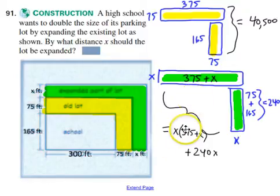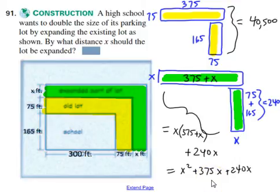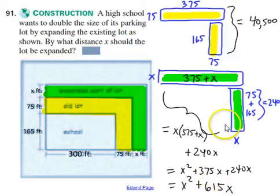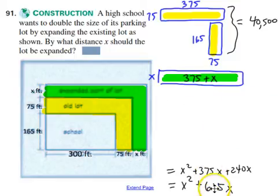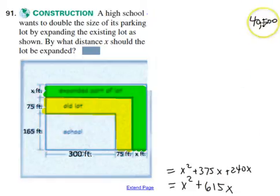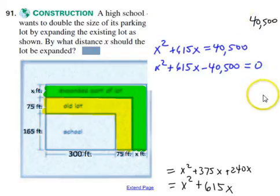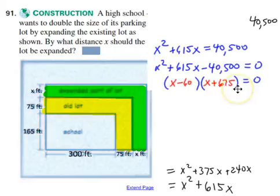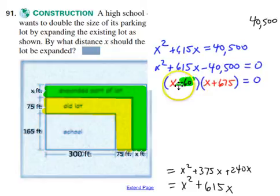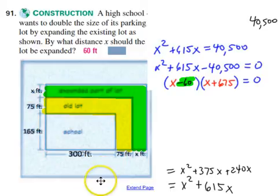The green space: x times (375 plus x), and x times these two things combined — which make 240 square feet — so it's 240x plus x times (375 plus x). Distributing and combining, you should end up with x² + 615x, which describes all the green space. Setting them equal: x² + 615x equals 40,500. Move everything to one side leaving the other equal to zero. You'll need a calculator to factor it, but it turns out the factors give you x = 60 as the positive answer. So 60 feet is the distance you should expand in every direction.